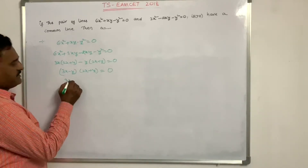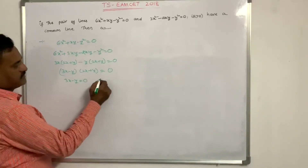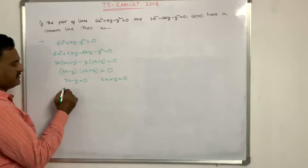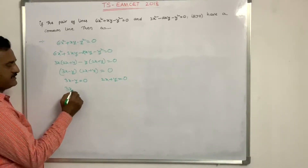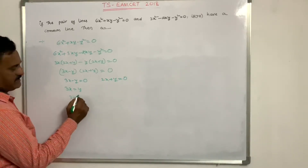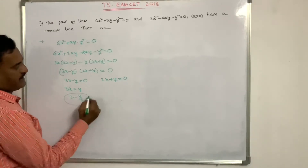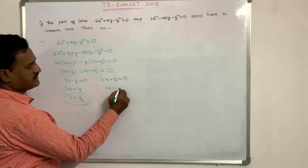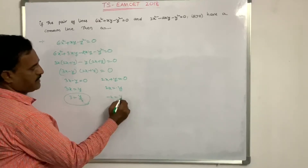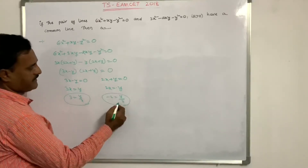The two lines from the first equation are 3x−y=0 (i.e., y/x=3) and 2x+y=0 (i.e., y/x=−2). These are the candidate common lines to check against the second equation.